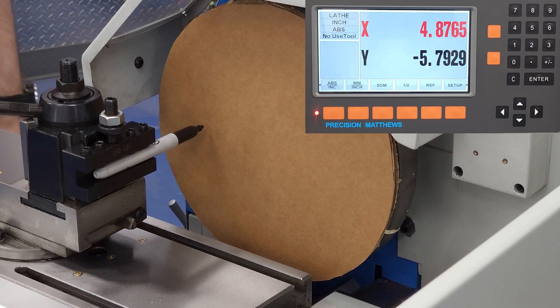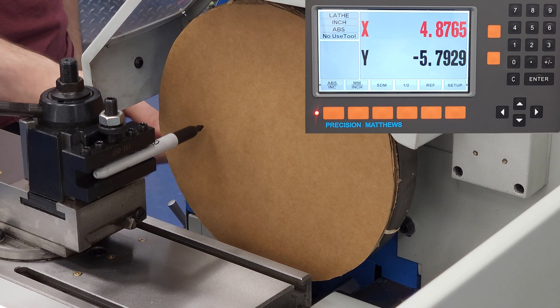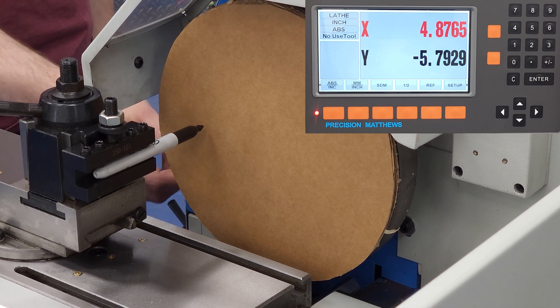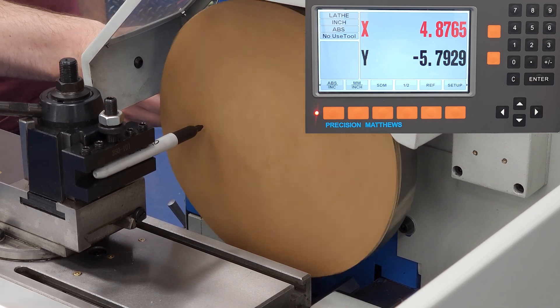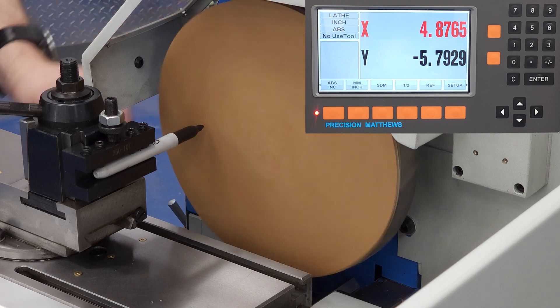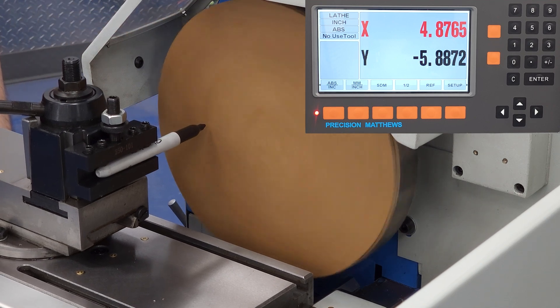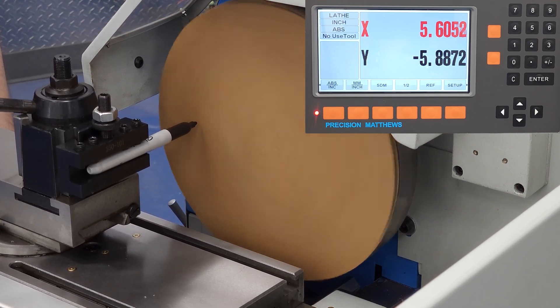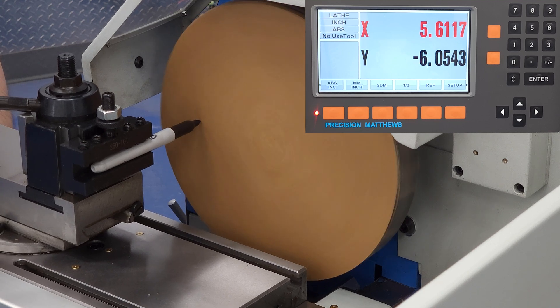I'm going to show you the two main methods that people use to turn a diameter with a lathe DRO. The method that you use is going to depend on whether you want to think about these numbers in radius or diameter. Radius being the amount that the tool moves, and diameter being the amount of material removed.